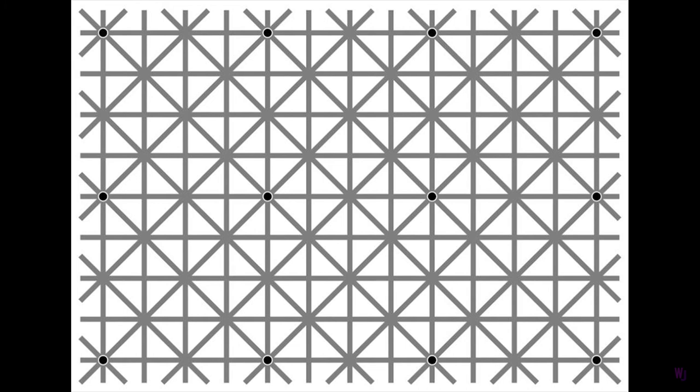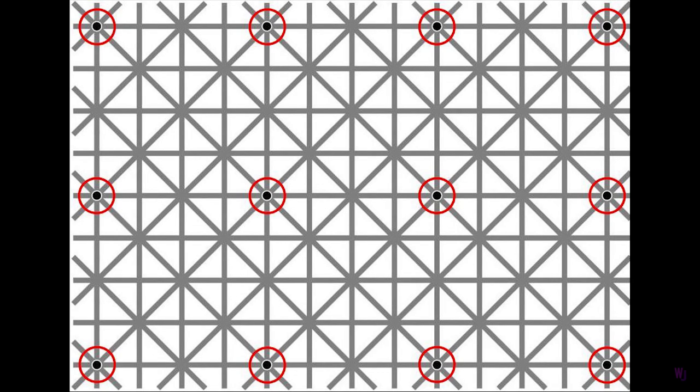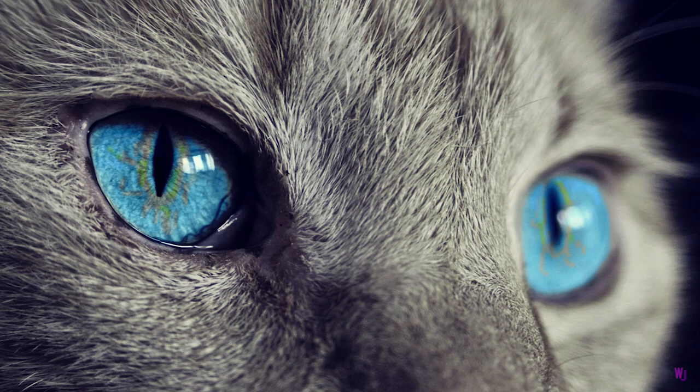However, when you scan your eyes across the image, you can clearly focus on the 12 dots individually. Scientists think that the white in between the gray lines make the dots seem lighter than how they really are, so the eyes see them as gray rather than black.